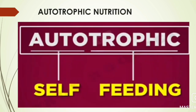The first topic in nutrition is autotrophic nutrition. 'Auto' means self and 'trophic' means feeding — so it means self-feeding nutrition. The example for autotrophic nutrition is plants. Plants are capable of making their own food, not depending on other organisms. Human beings and animals depend on other organisms, but plants do not. This type of self-feeding nutrition is known as autotrophic nutrition.